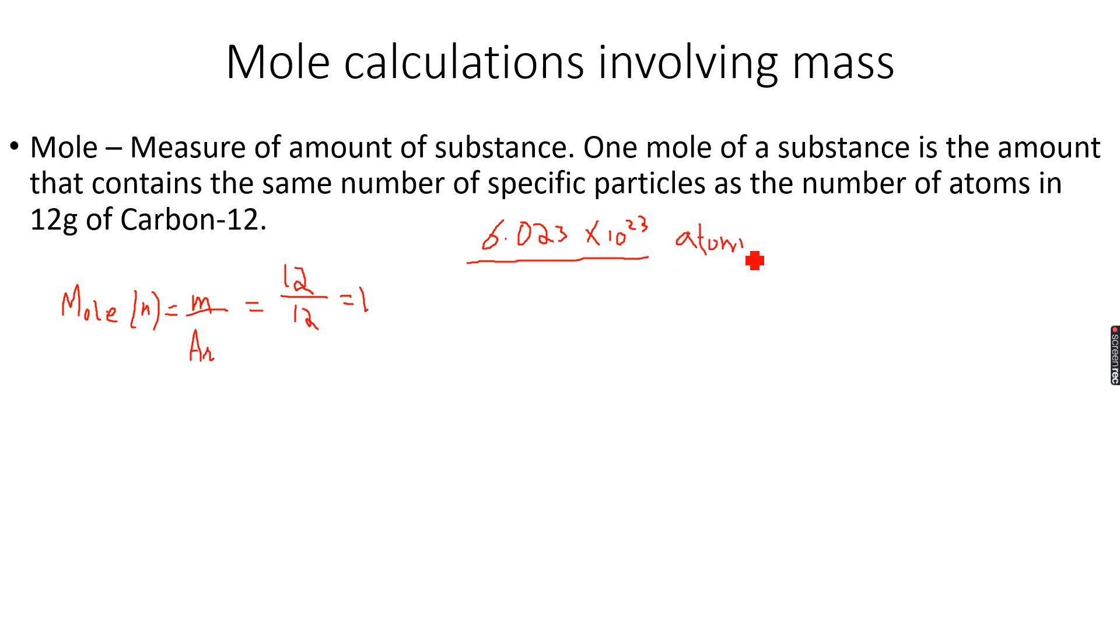The one mole of a molecule is basically the mass of the molecule that is given to us. That means we can have any grams, any amount of mass that is given in the laboratory. So this small m is the mass that has been given to us, which means the mass that has been provided.